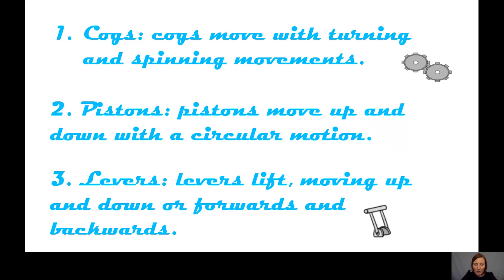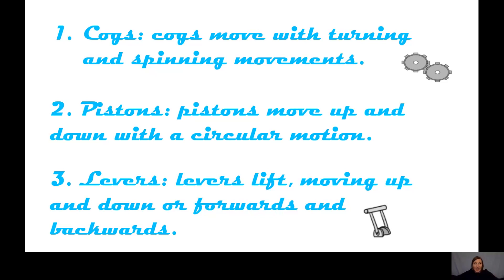In this first part of the dance we're going to use just our arms and be levers. For each count we move a different part of our arm — forwards, backwards, to the side, and in. On count one, move one arm forward. Count two, the second arm. Count three, bring it back. Count four, bring the next one back. Count five, push to one side. Count six, to the other side. Count seven, bring it back to the middle. Count eight, bring it back to the middle. Then start again. Let's try: one, two, three, four, five, six, seven, eight.